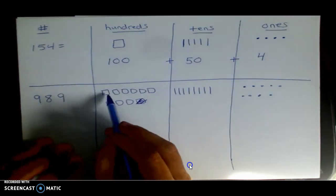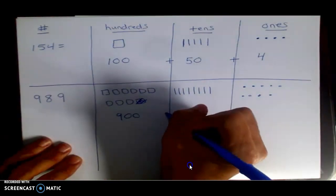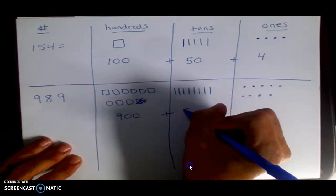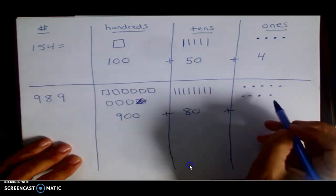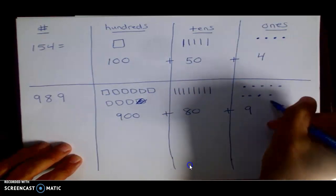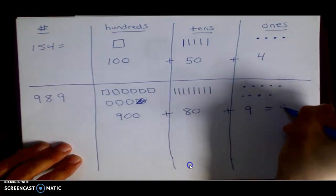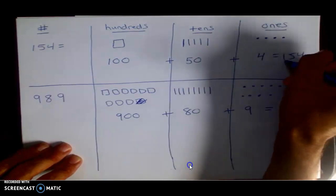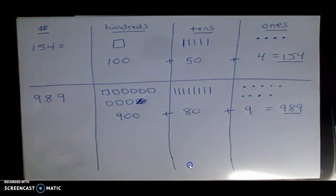I went over that time. What's the value here? Well, I have nine hundreds, that's 900, plus I have eight tens, that's 80, plus I have nine ones, which is 9. And that all equals 989. This equals 154.